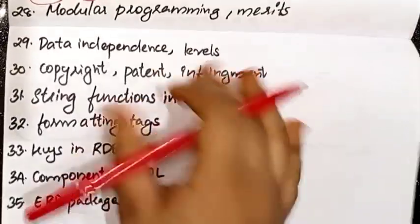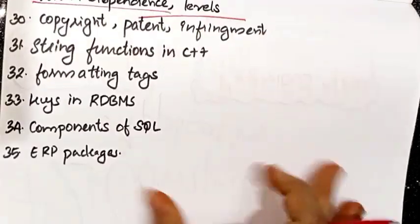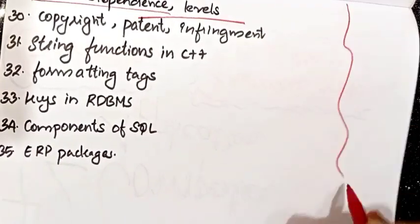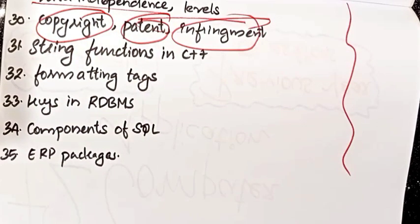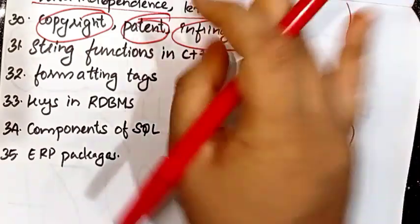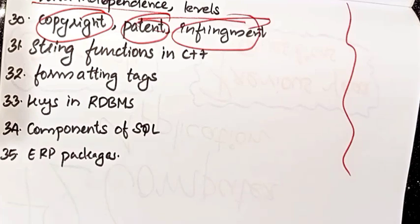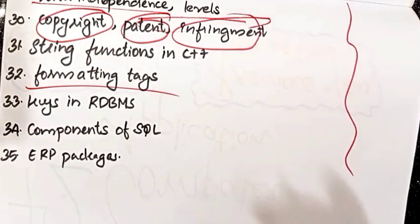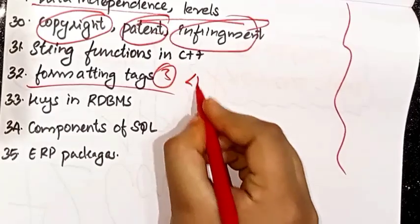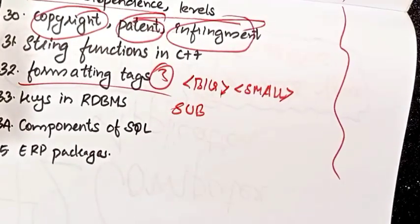Modular programming — 100% issue. Data independence. Copyright. Patent infringement, copyright — legal rights created for an original work, usually for a limited period of time. Copyright, left copyright, August copyright.